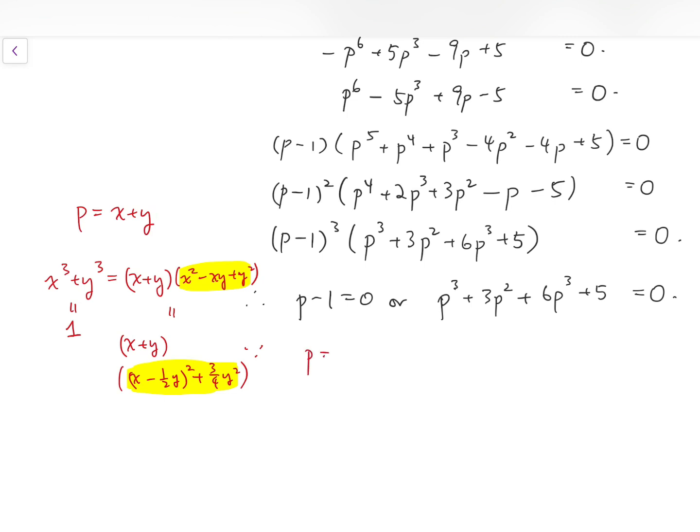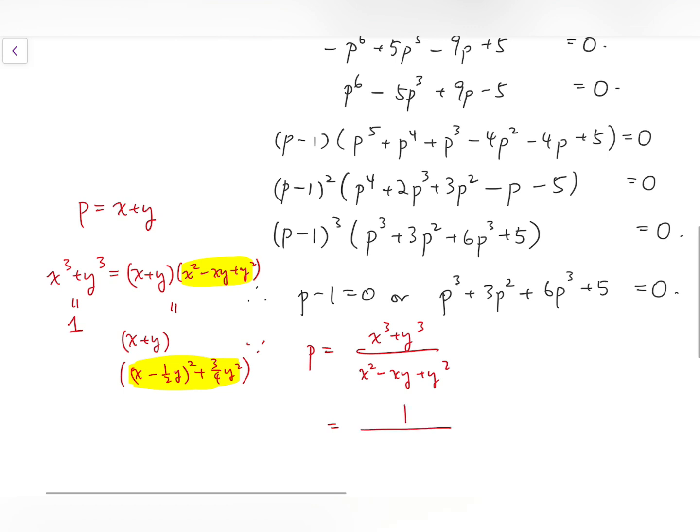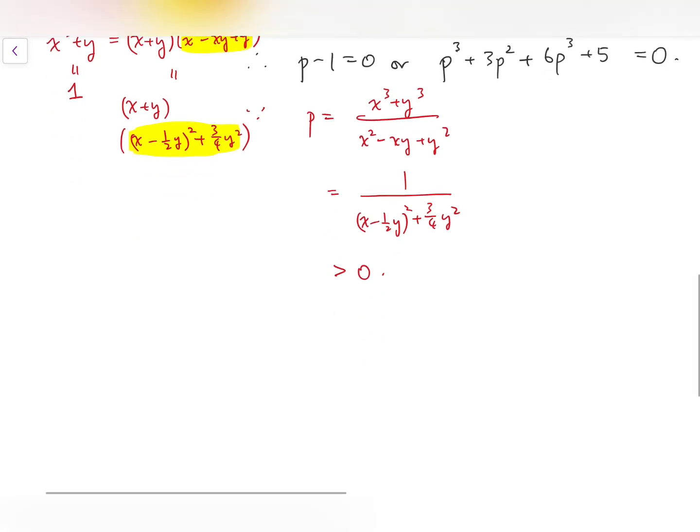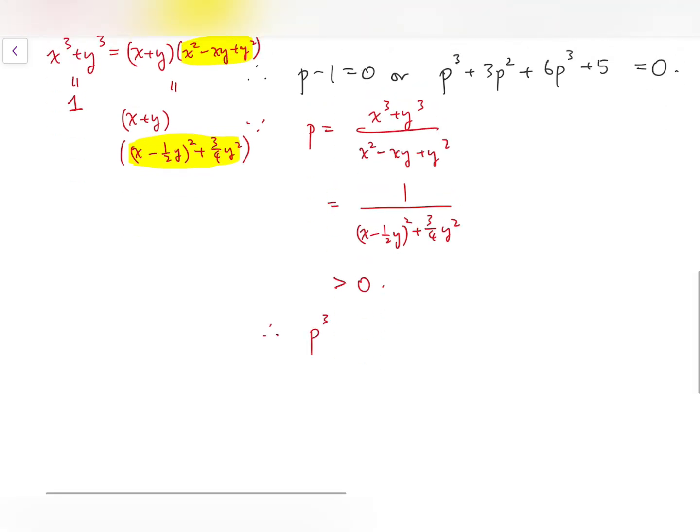And so that means x plus y cannot be negative as well. Because p equals x cubed plus y cubed over this, I'm going to argue it this way, which is positive. So therefore p must be positive as well, is at least five and clearly positive. So that means we cannot have any solution for this case.